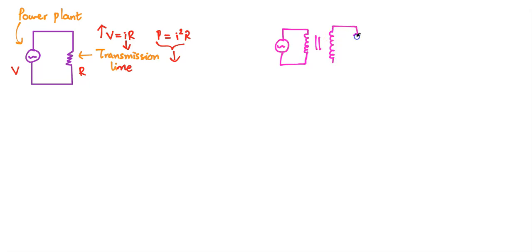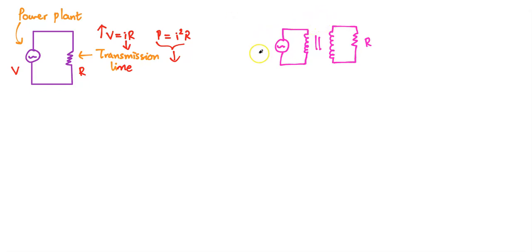That transformer eventually connects to the transmission line network. And if you're an electrical engineer, you are probably not impressed by how much we have simplified the problem — this is almost a toy problem, nowhere close to the representation that real-world electrical engineers use. But for the purposes of this video, it's a good way to think about it. So: the power plant produces voltage V, the transmission line has resistance R, this is the primary coil of the transformer with NP turns, and the secondary coil has NS turns.